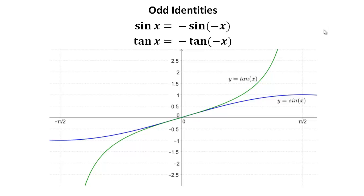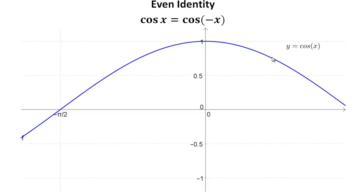Next are the odd identities. Because of the odd nature of sine and tangent — graphed here between negative π/2 and π/2 — odd means a function can be reflected about the origin. So the sine of an angle equals the negative of the sine of the negative angle; for example, sin(π/6) = −sin(−π/6). The even identity applies to cosine: cosine of an angle equals the cosine of the negative angle, so cos(π/4) = cos(−π/4).